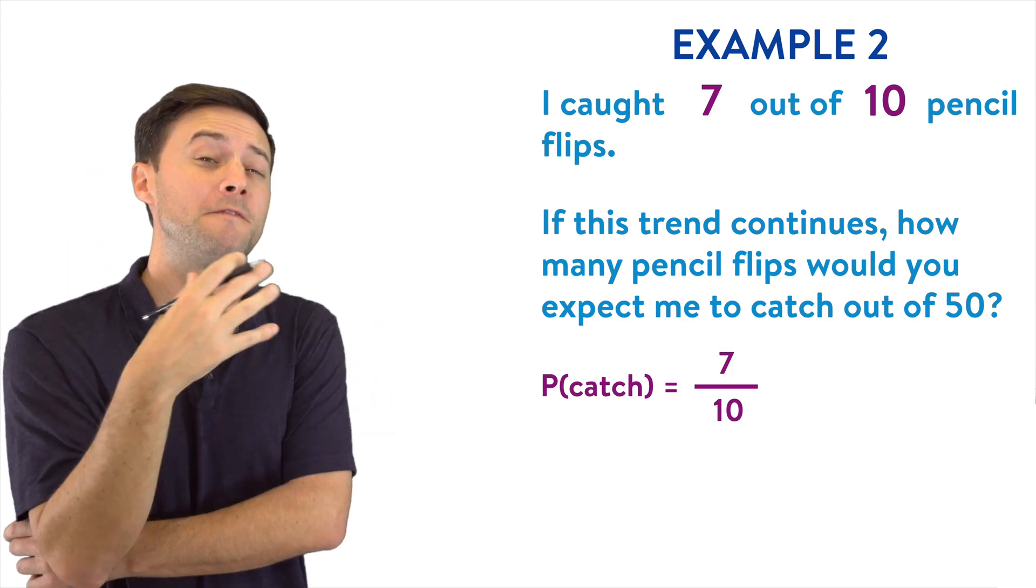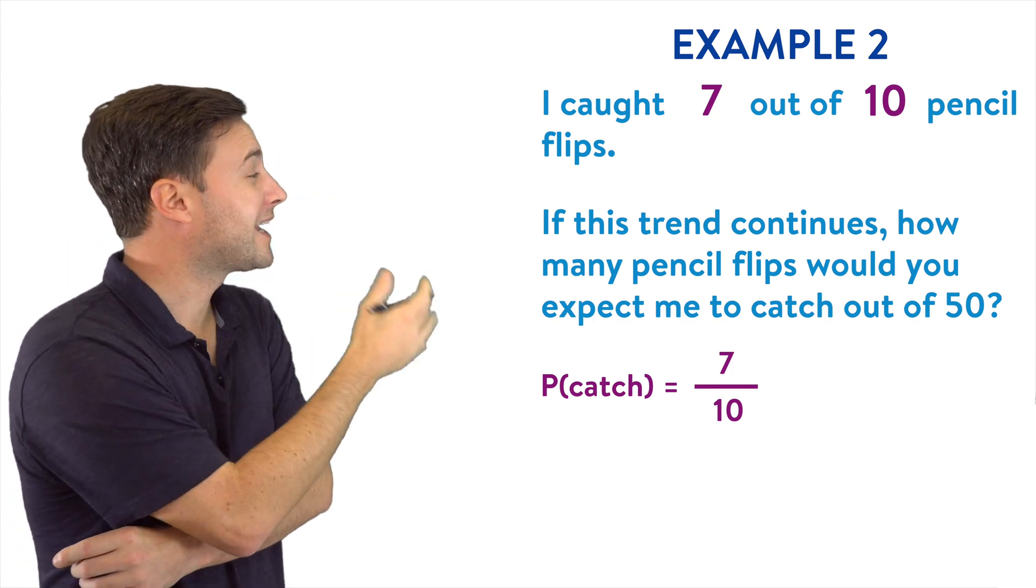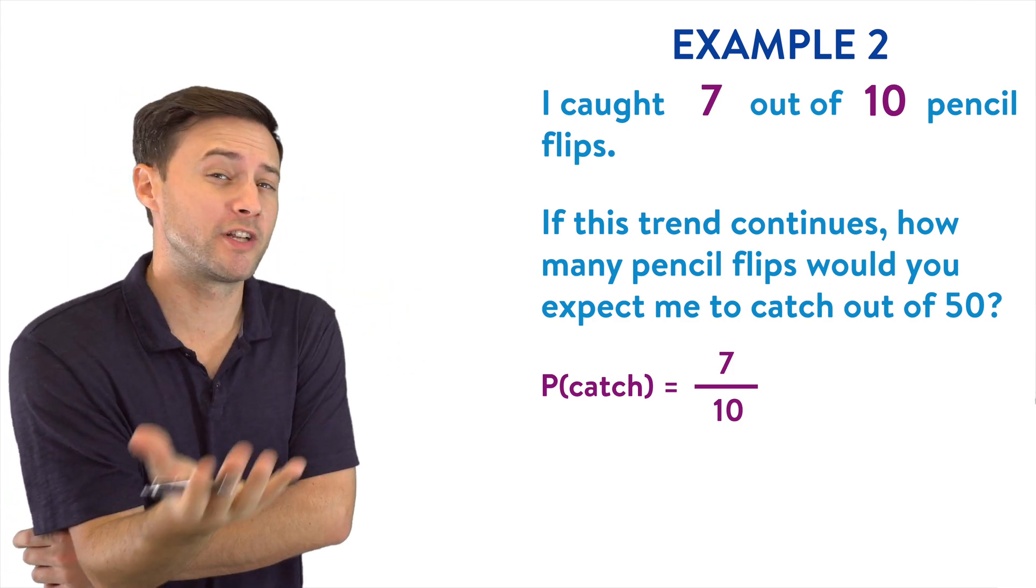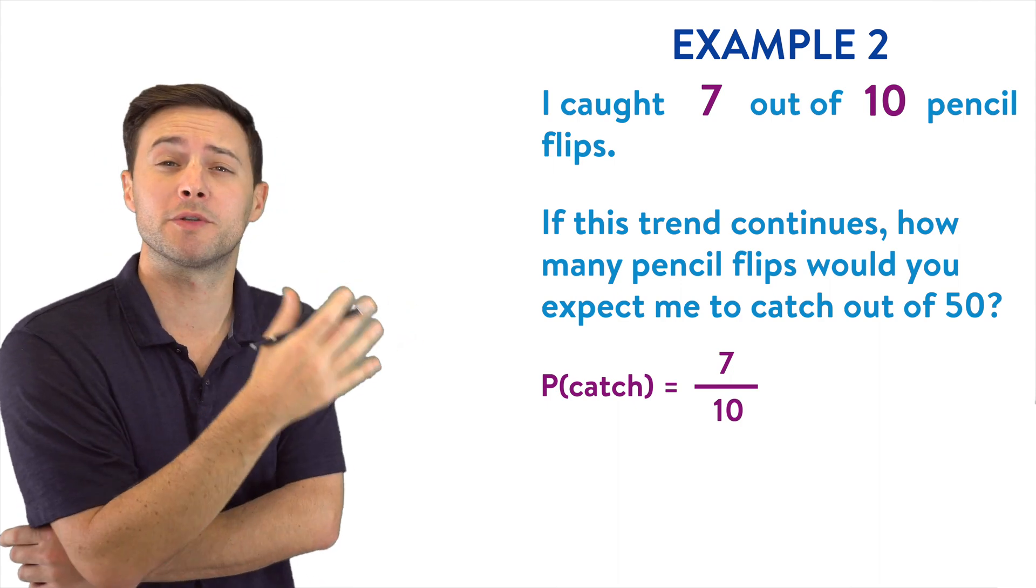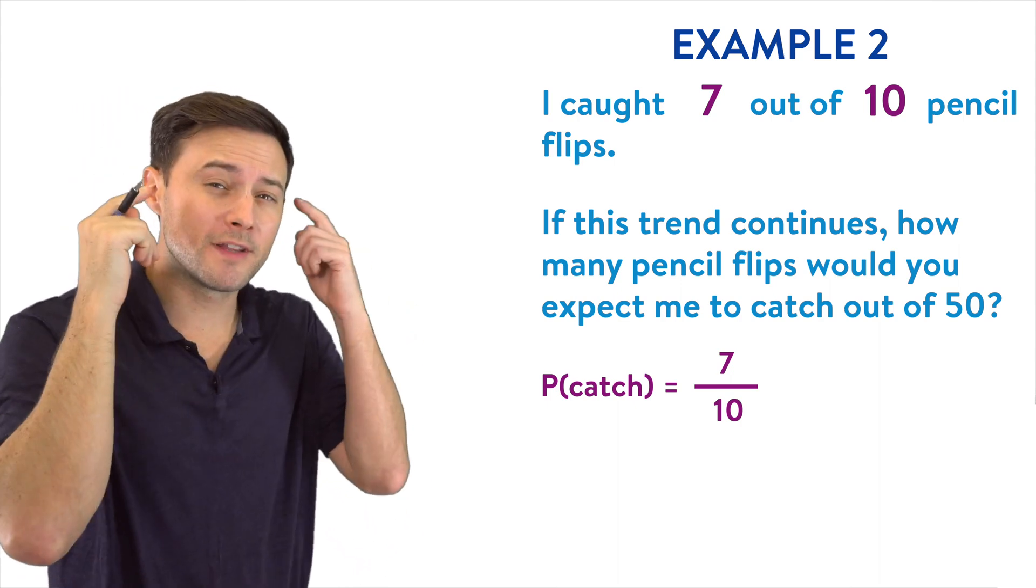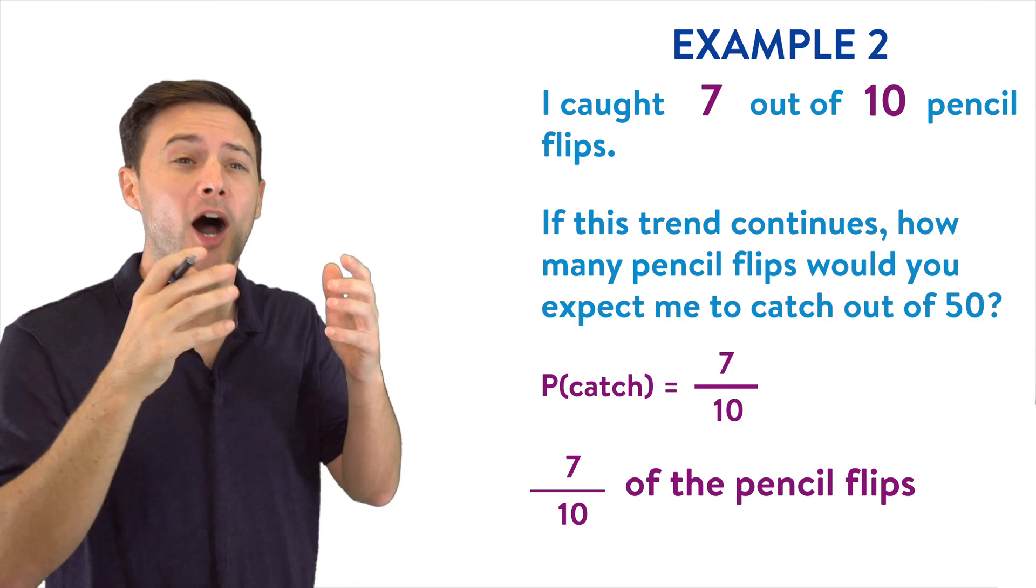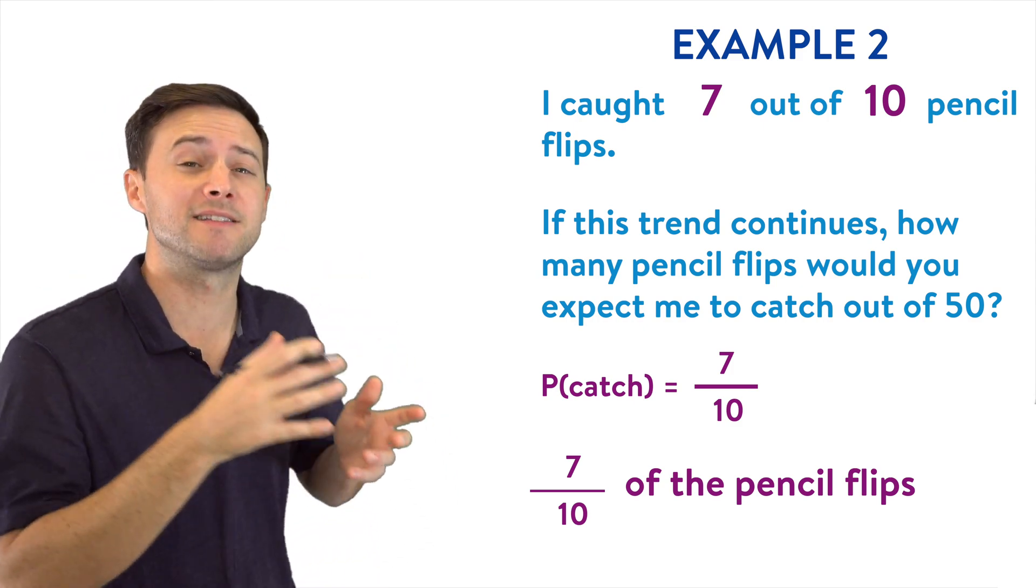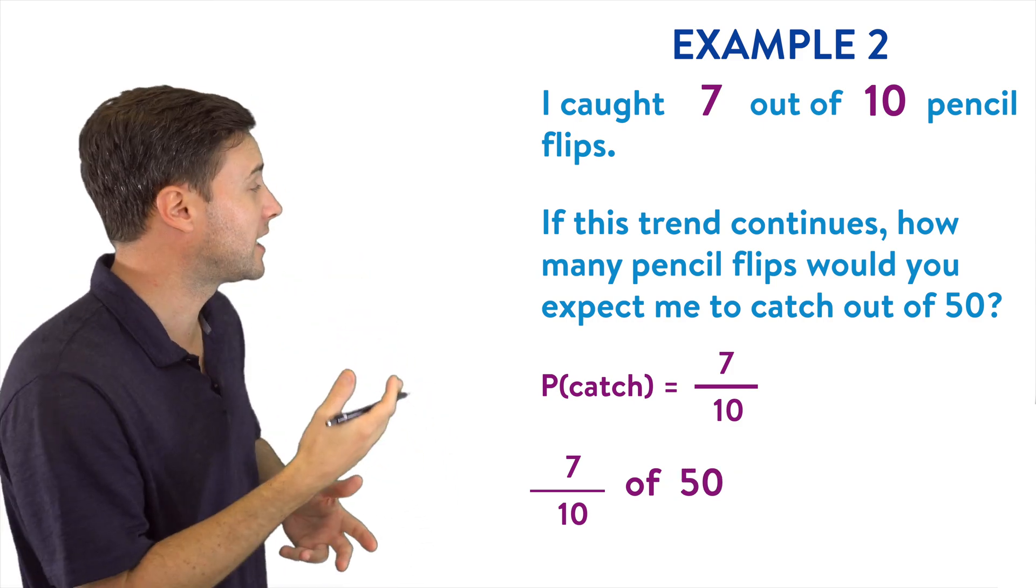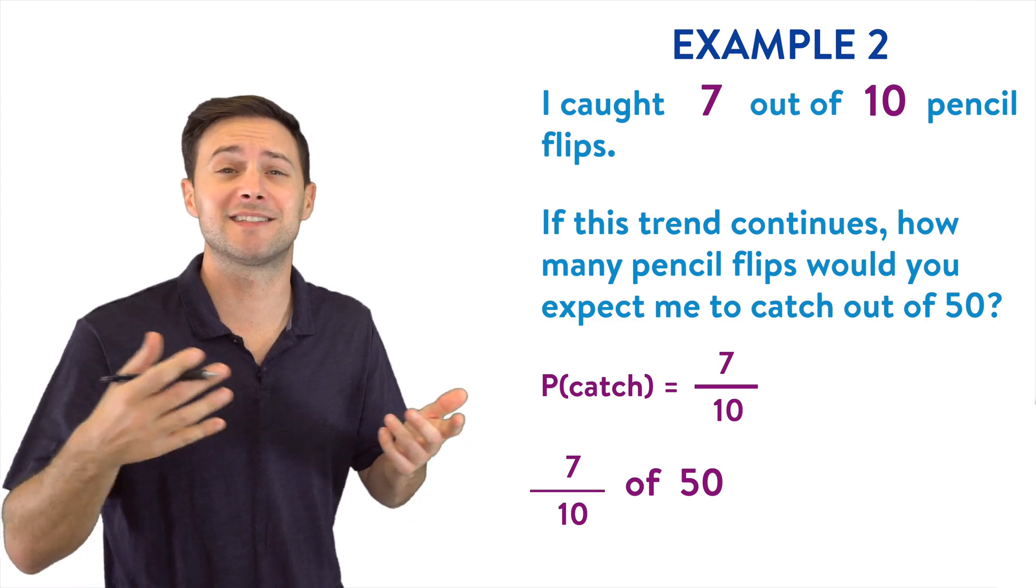So if I'm doing 50 flips, I can figure out how many I should expect to catch by just using multiplication. If you think of it this way, seven tenths of the flips. Well, seven tenths of 50, in this case, that just means seven tenths times 50.